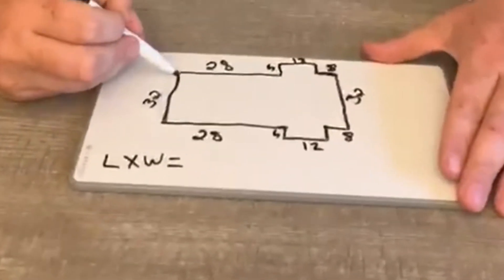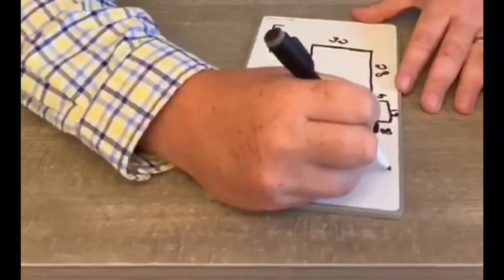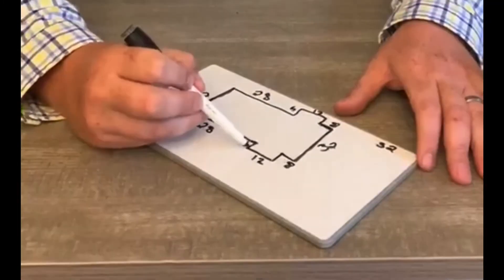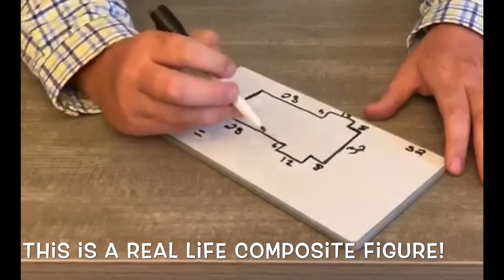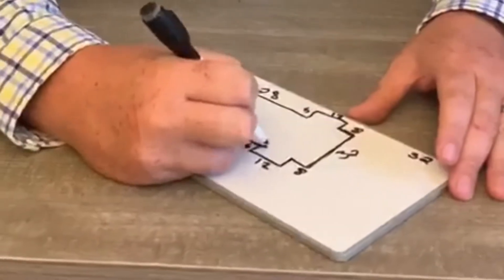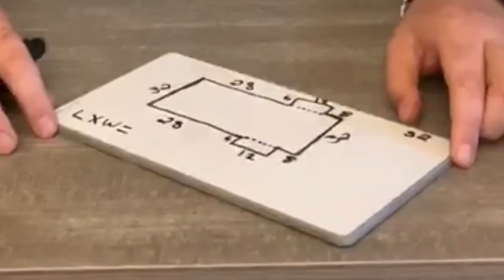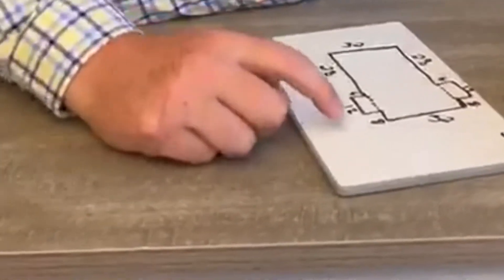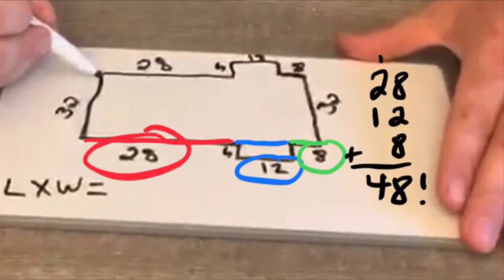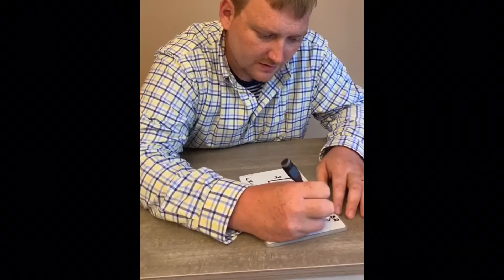We know the width on this side and the width on this side is 32. Now, as you can tell, this house has a couple of little rooms built on that actually makes it a little bit larger. So what we're going to do is imagine that they aren't there for the time being — we're just going to imagine those rooms are not there. We're going to add this together to get our length: we've got 28 plus 12 plus 8, that's 48, times 32.